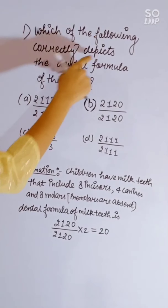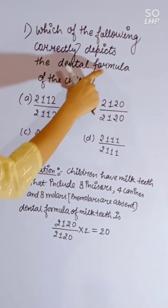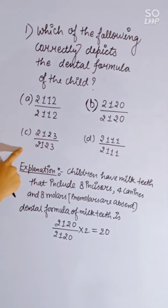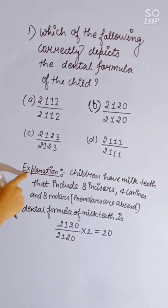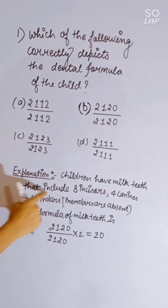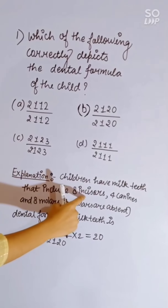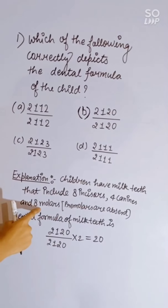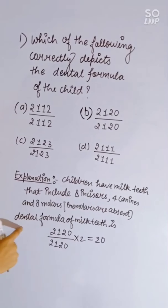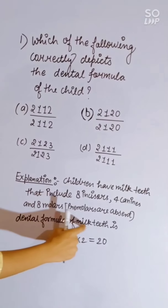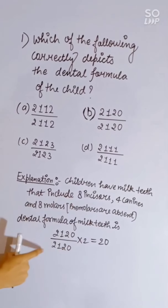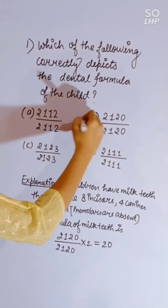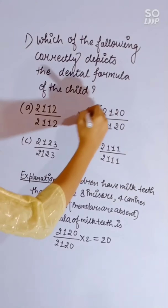Which of the following correctly depicts the dental formula of a child? Children have milk teeth that include 8 incisors, 4 canines, and 8 molars — 3 molars are absent. The dental formula of milk teeth gives correct answer B.